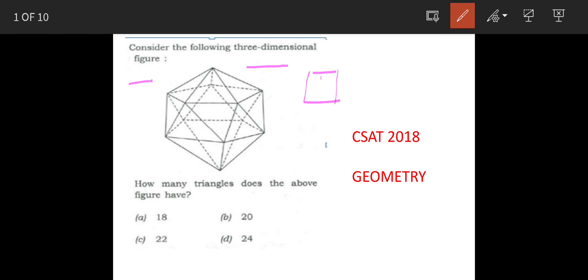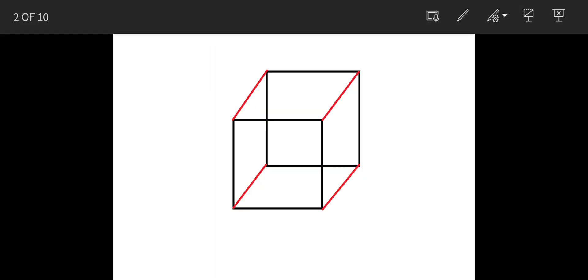Let us say a solid cube or a solid triangle - that is called a three-dimensional figure. So how many triangles does this figure have, and these are the options. We will see the solution. The three-dimensional figure shown in the question is basically a cube.